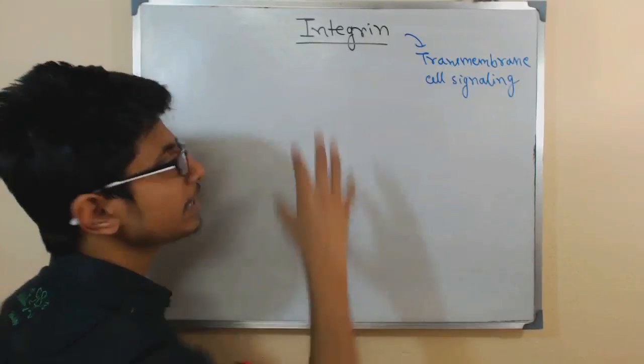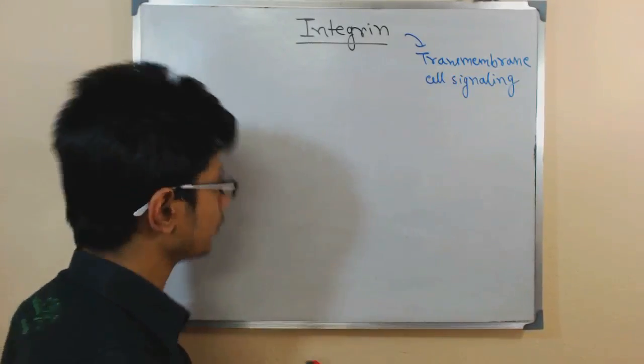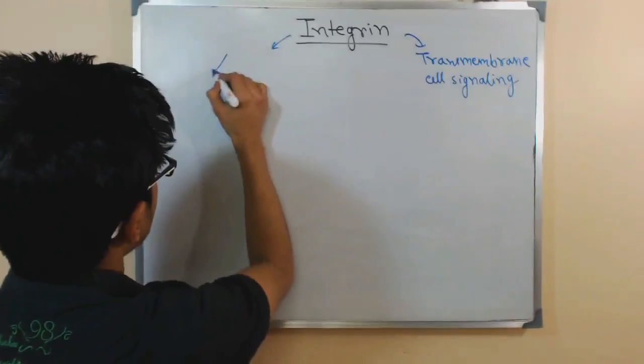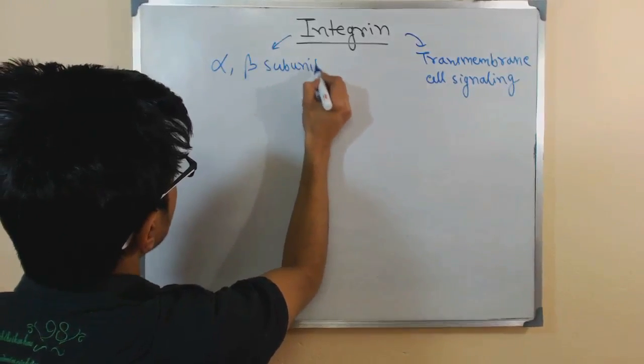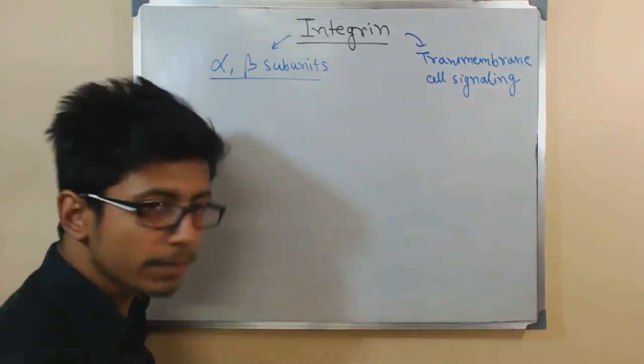Now, if we look at here, integrin is having two different subunits, one is alpha and another one is beta. Those subunits are present in integrin.